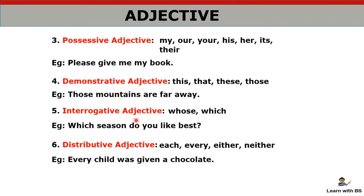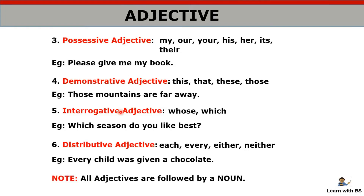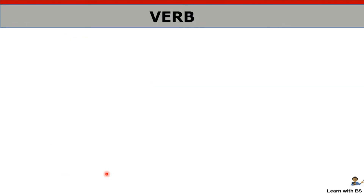Distributive adjective — for example, 'every child' — the word 'every' is followed by noun 'child'. 'Every child was given a chocolate' — so this is a distributive adjective. Remember: all adjectives are followed by a noun, because adjectives are describing words — they describe nouns — so they always come before the noun.